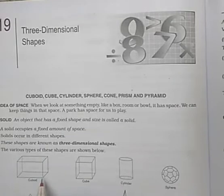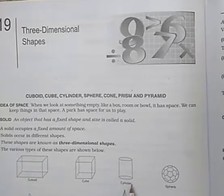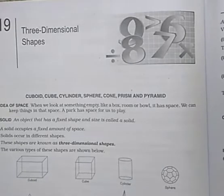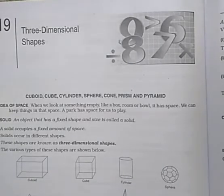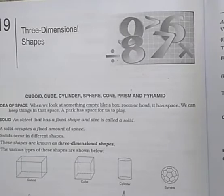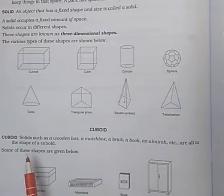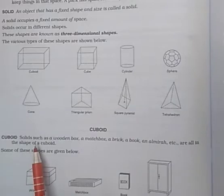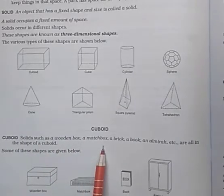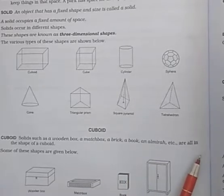Here I am showing: this is a cuboid, cube, cylinder, sphere, cone, triangular, square, pyramid, and tetrahedron. This is a cuboid. Solids such as a wooden box, matchbox, brick, book, and almirah are examples of cuboid shapes.